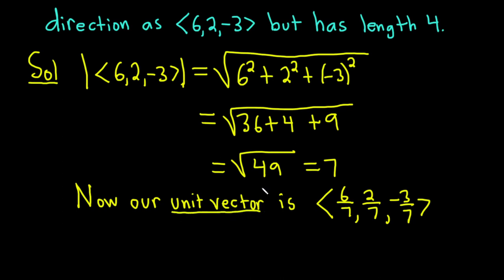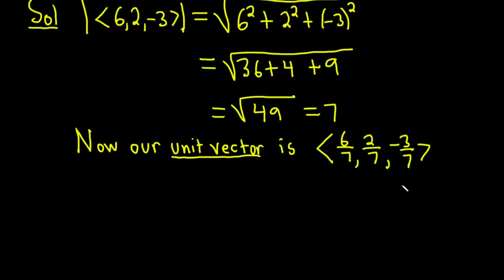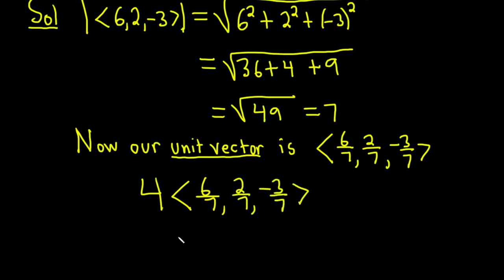This process is called normalizing the vector, and it's very important. Unit vectors matter in mathematics because there are many formulas involving magnitudes, and if the magnitude is 1, life is easier. But we don't want a unit vector — we want a vector that has length 4. So we multiply the entire unit vector by 4: 4 times <6/7, 2/7, -3/7>. Distributing the 4 gives us 24/7, 8/7, and negative 12/7.